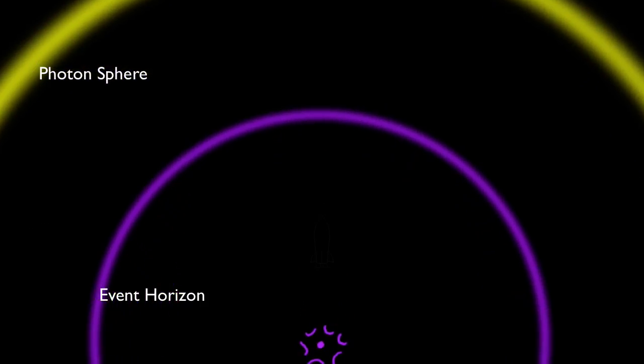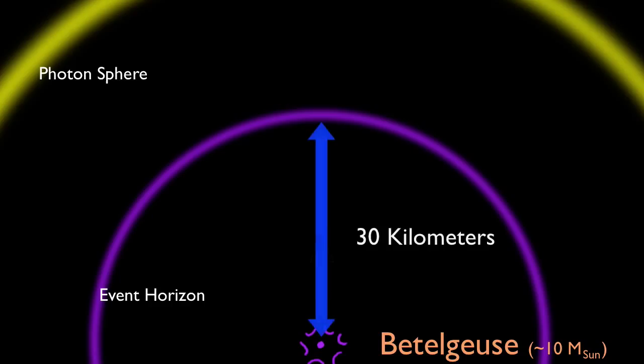The greater the mass of a black hole, the larger the event horizon. If Betelgeuse were to collapse into a black hole, its event horizon would have a radius of about 30 kilometers.